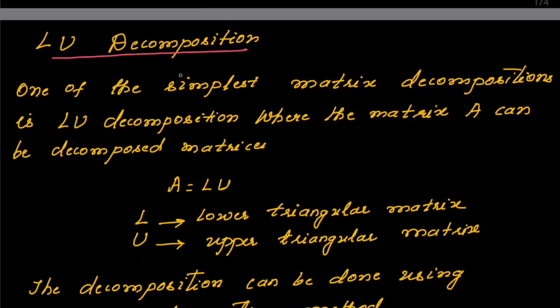There are different methods of matrix decompositions like LU decomposition, QR decomposition, and singular value decomposition. The one we are going to see here is LU decomposition. This is one of the simplest matrix decompositions where matrix A can be decomposed into L and U. L is the lower triangular matrix and U is the upper triangular matrix.